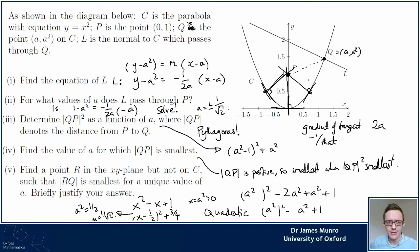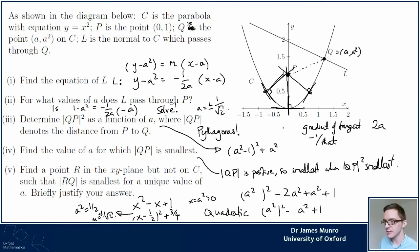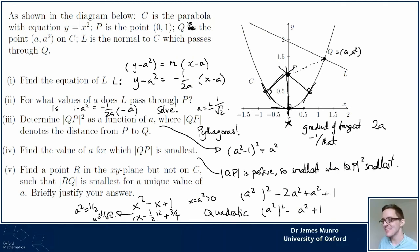We've got one last part: tell me about any point in the xy-plane not on the curve such that the length RQ is smallest for a unique value of a - meaning a unique closest point on the curve. Matt in chat has gone for the point (0, −1), saying that if you take a point down there, the closest point is the origin, and any other point on the curve is further away in both the x-direction and y-direction.